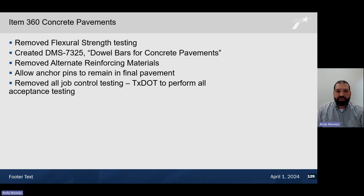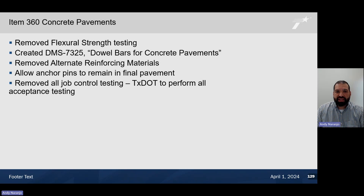Due to a FHWA stewardship review, we removed all job control testing done by the contractor, and TxDOT will perform all acceptance testing in concrete pavement. The FHWA did not agree with the way TxDOT was performing split sample verification. Therefore, the options were to go to a statistical analysis similar to what a design-build project does, or for TxDOT to perform all concrete pavement acceptance testing. A decision was made for TxDOT to perform all that testing to stay away from the statistical analysis criteria.